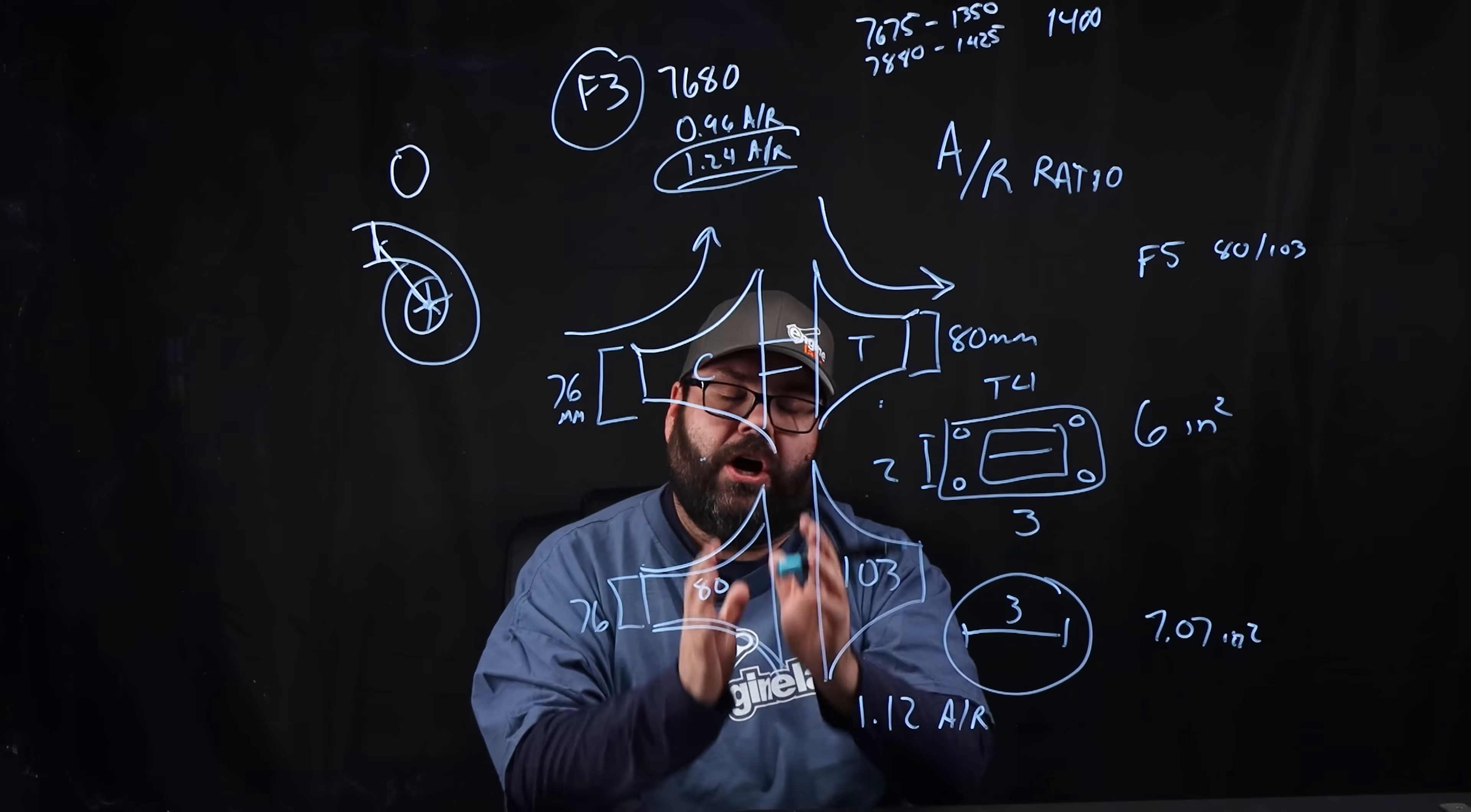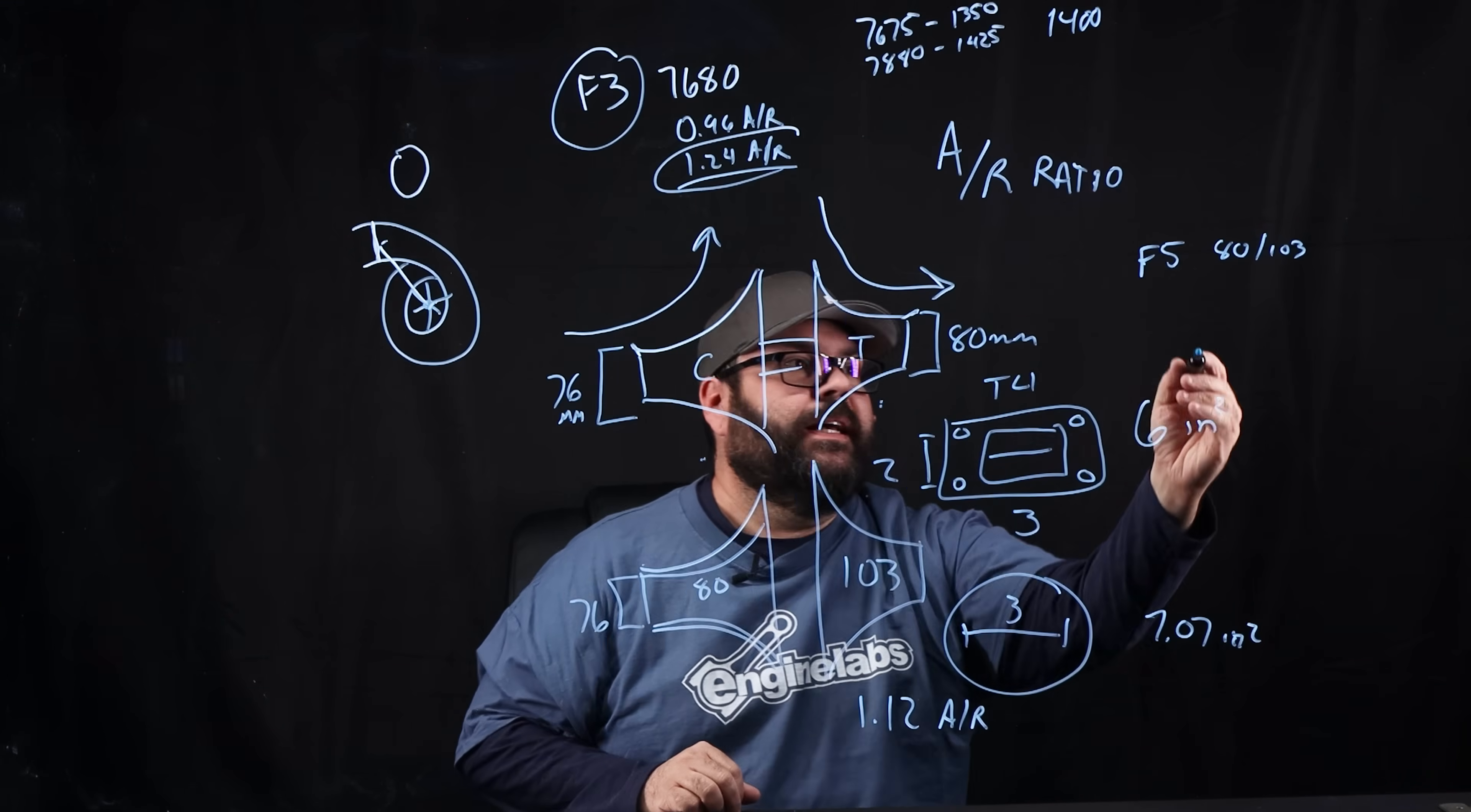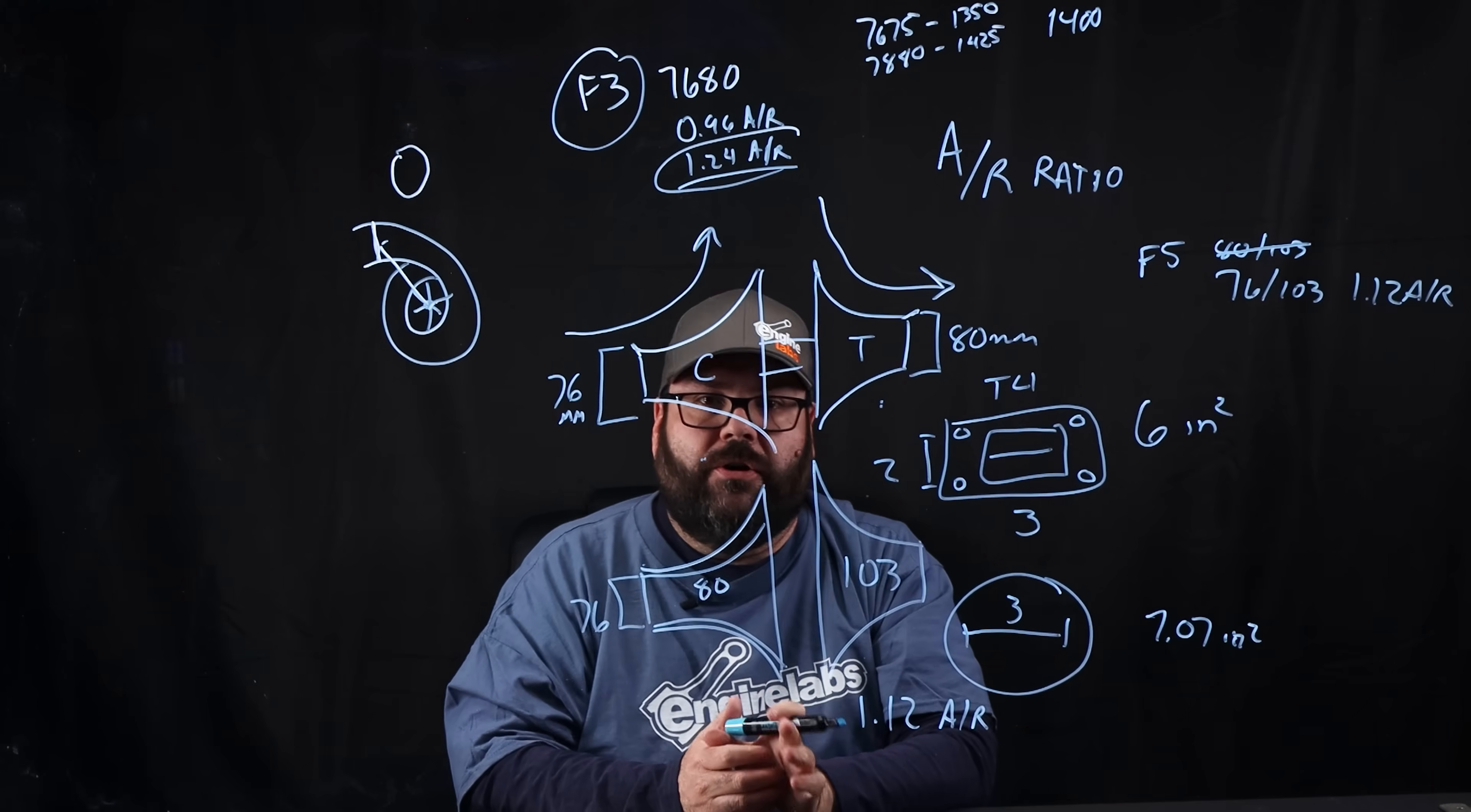So like I said, talking to HPT, they're doing all this for us. Luckily, they had a couple compressor housings they could cut down to match a cut down 80. So now what we're running is a 76-103 F5 1.12 AR. These are the new turbos that are going to go on the trucks.